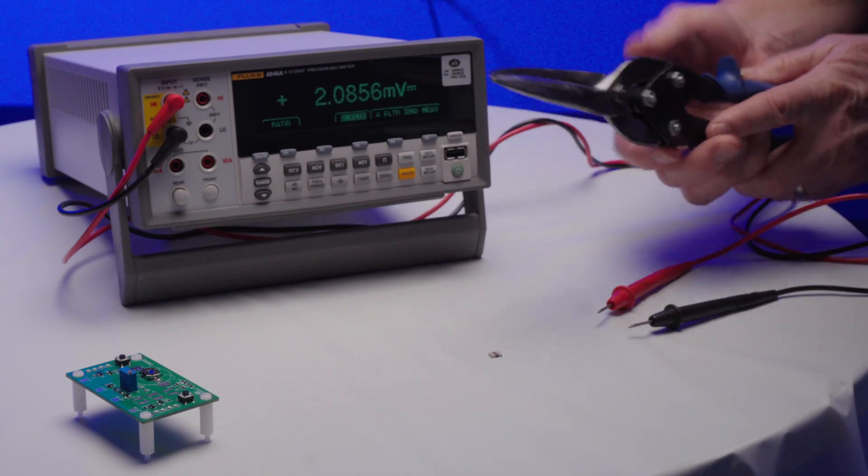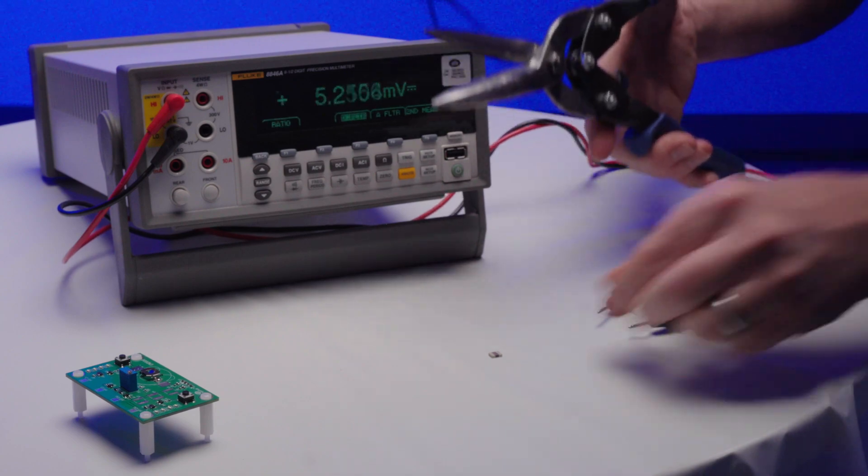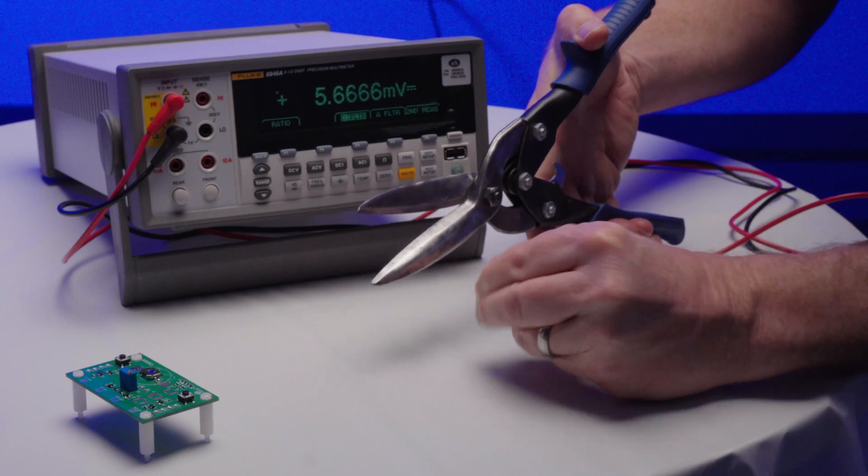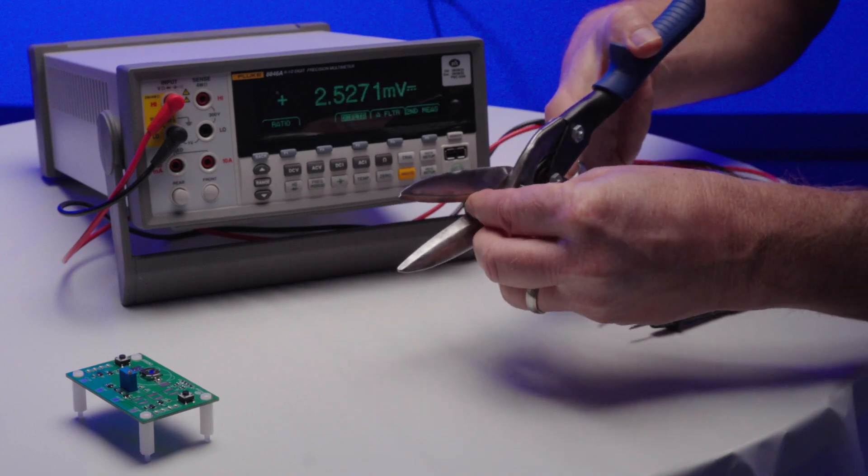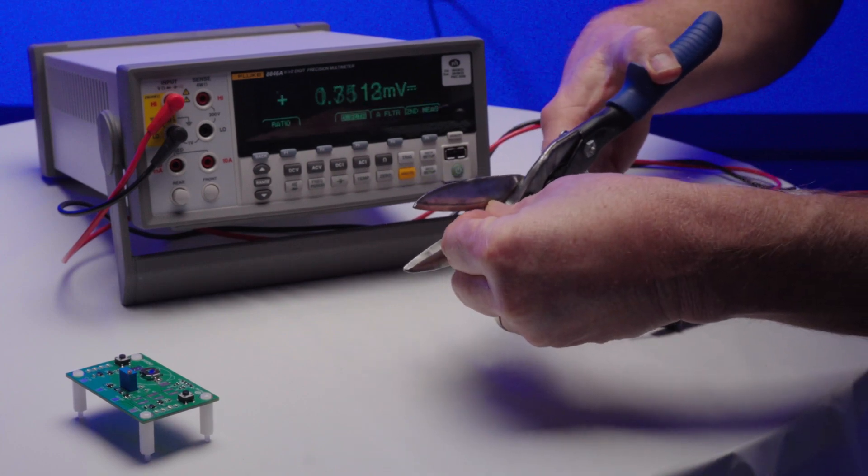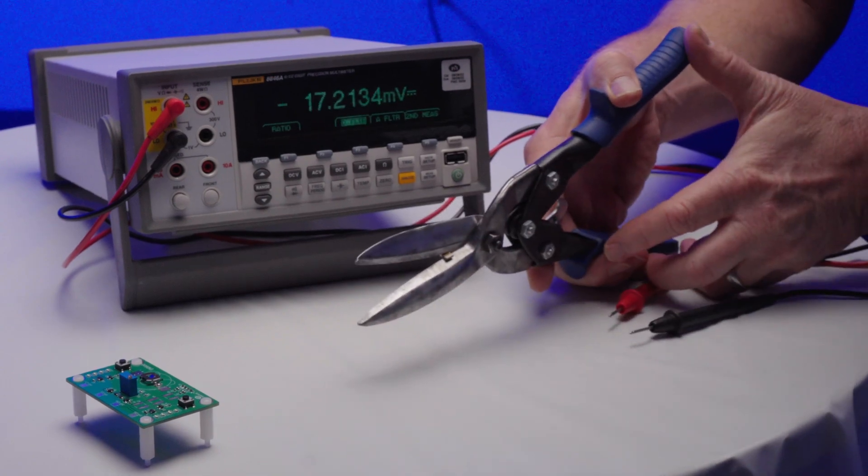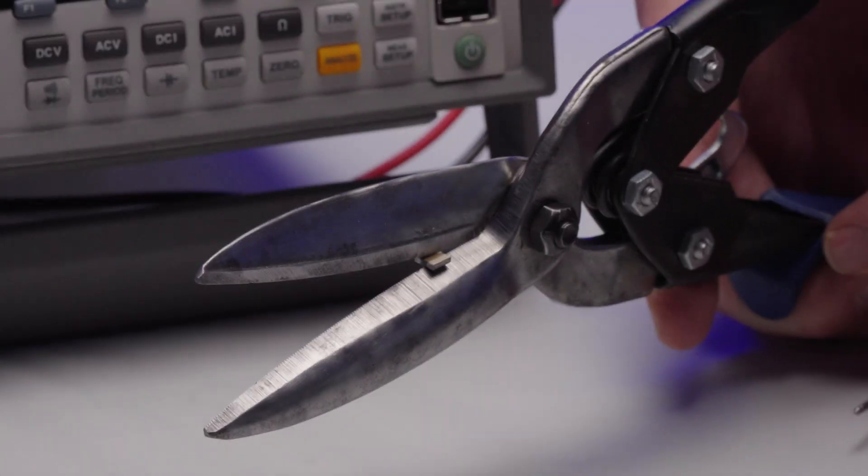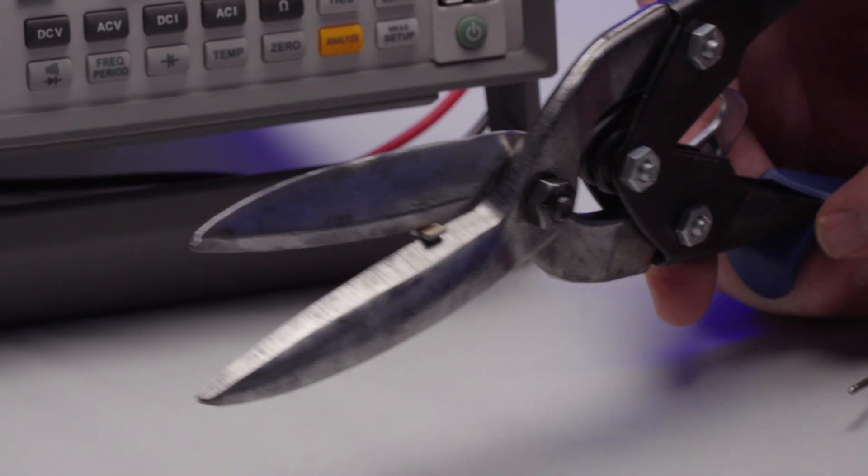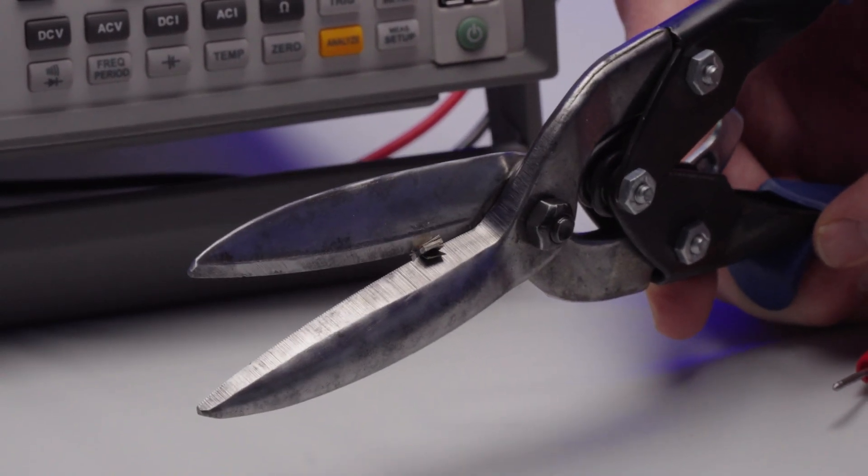We will then place the battery in the shears and cut the device. As you can see, there is no smoke, outgassing, or flames.